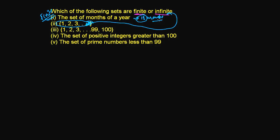That's why it's an infinite set, because you cannot count the total number of terms. There are huge, huge numbers. The third one is {1, 2, 3, 4, ..., 99, 100}.